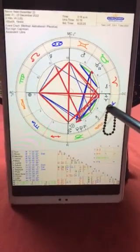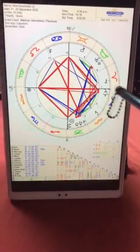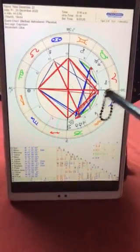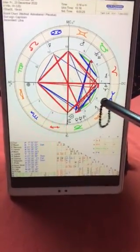Then we have Jupiter and Neptune very close to each other. Jupiter is just going from Pisces into Aries, starting a new cycle, but they're still kind of close together.